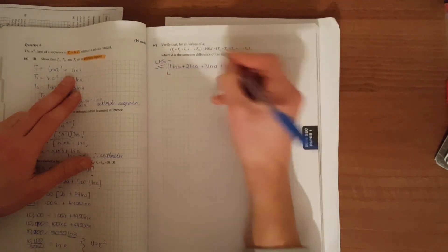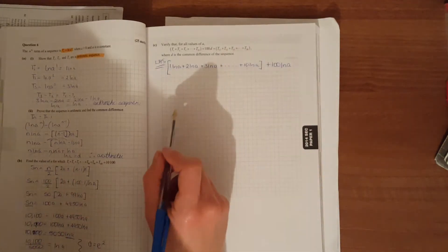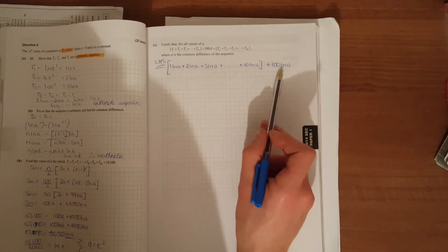Plus 100 times the difference ln(a). Tidy that up. Here you could take out the ln(a).